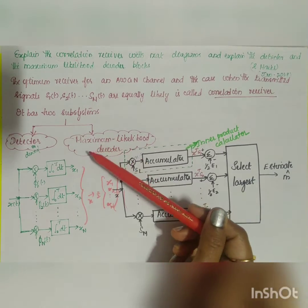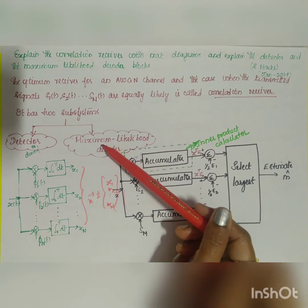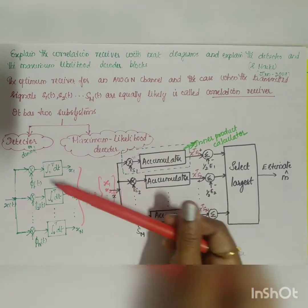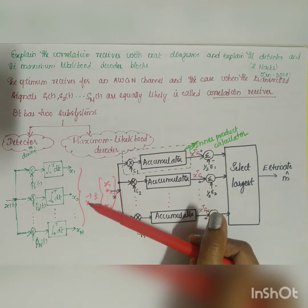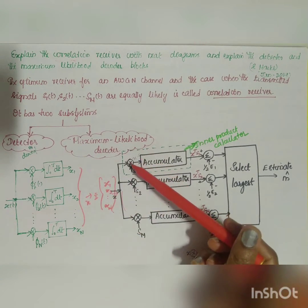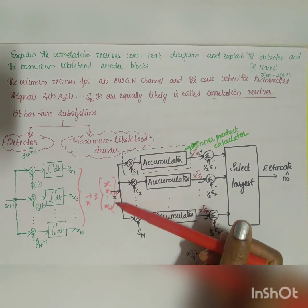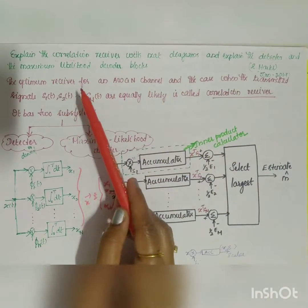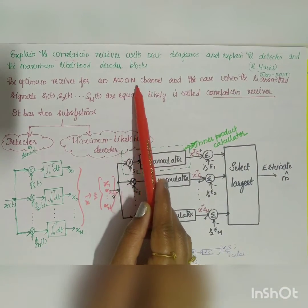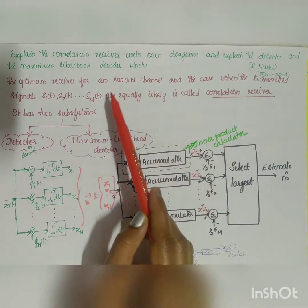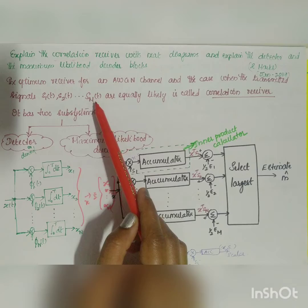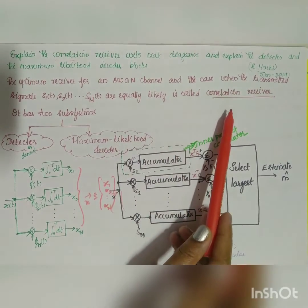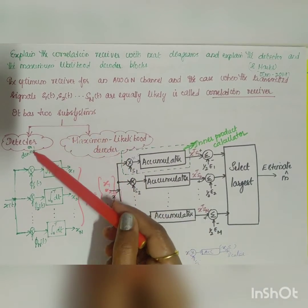The correlation receiver has two main subsystems: one is the detector and the other is the maximum likelihood decoder. In the detector, on the receiver side, the received signal x(t) is converted into the observation vector x. In the maximum likelihood decoder, the observation vector x is converted to the estimate m-cap. The optimum receiver for an additive white Gaussian noise channel, where transmitted signals s1, s2 up to sm are equally likely, is called a correlation receiver.